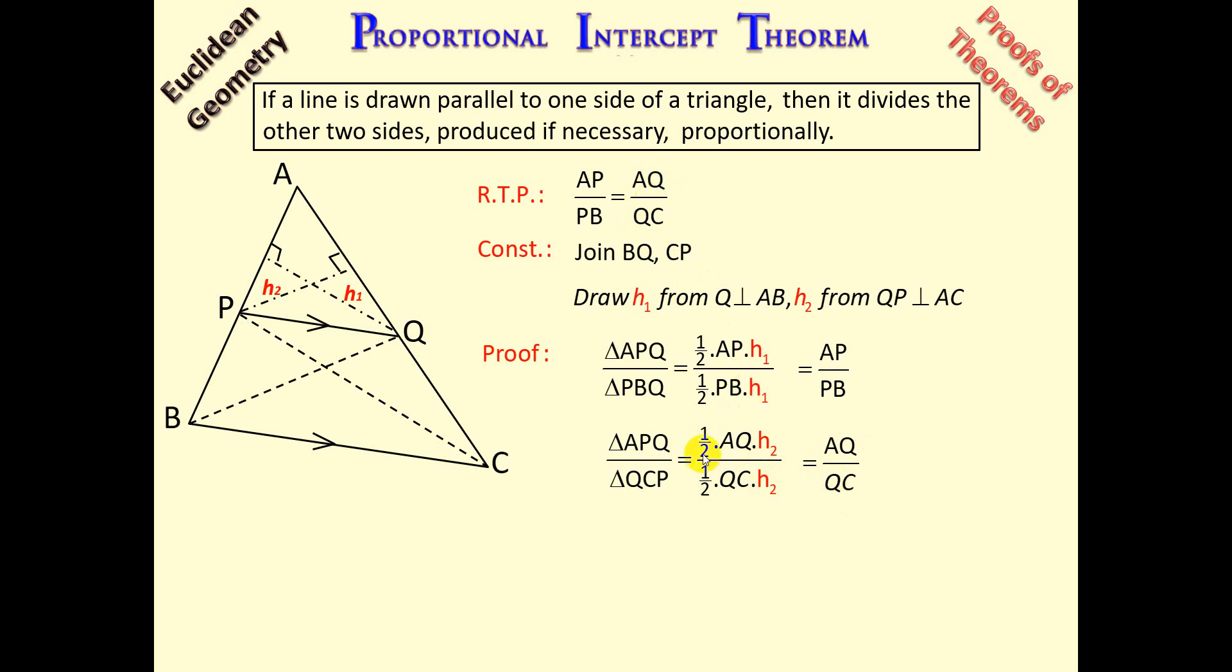Now, if we investigate this closely, we can conclude that triangle APQ appears in both ratios—those are common triangles. And then we have triangle PBQ is equal to triangle QCP. And the reason why these two triangles are equal: if we look at triangle PBQ and QCP, they have the same base called PQ, and they lie between the same parallel lines, so we can say same height.